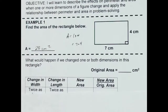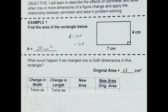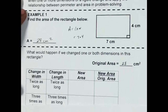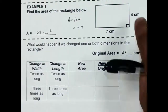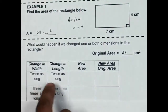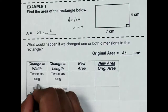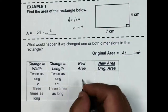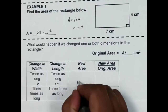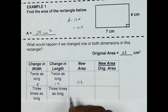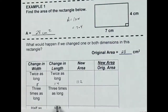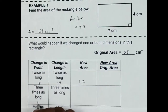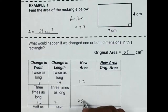We're going to take that original area and see what happens when we change some things. My original is 4 by 7. If I double both the width and the length, that's going to change to 8 by 14, so my new area comes out to be 112. Next, 3 times as long gives 12 by 21, and 12 times 21 comes out to be 252.